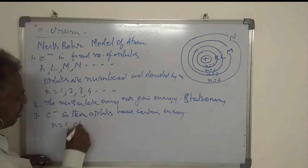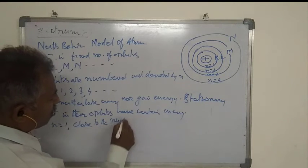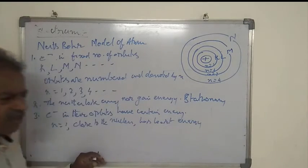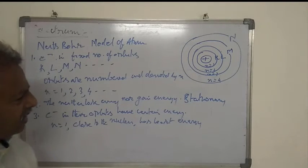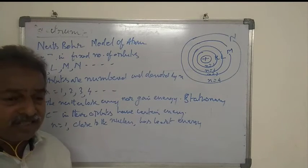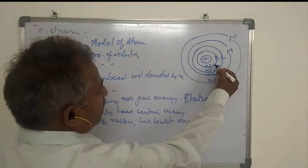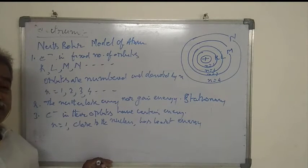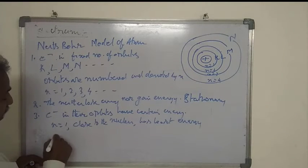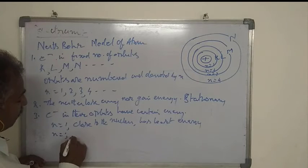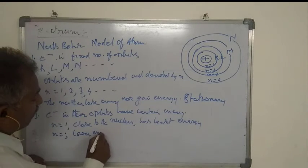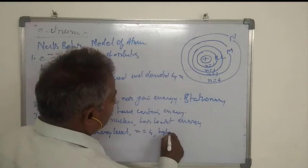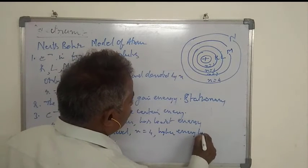N = 1 is close to the nucleus and has least energy. Electrons revolving in orbits very close to the nucleus have least energy. As electron moves farther from the nucleus — n = 1, 2, 3, 4 and so on — energy goes on increasing. Thus we can say n = 1 is referred as lower energy level, and n = 4 is higher energy level.